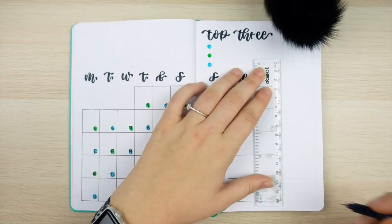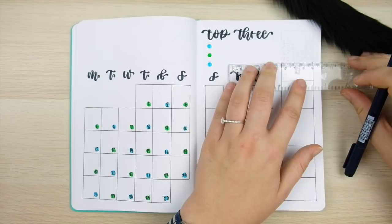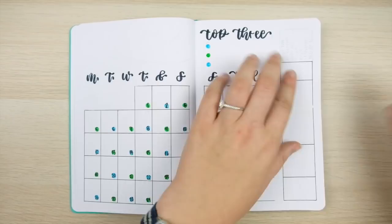If you could only get three things done this month, what three things would those be? You then just write those down here separated from your other task lists so that way they don't get lost in the shuffle. And at a minimum you'll be sure to remember to get those three most important things done.